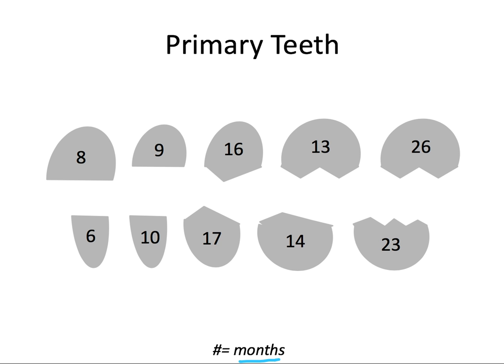The primary teeth are the centrals, laterals, canines, first primary molars, and second primary molars. Starting with the lower central incisor, you draw your lowercase n, then your x, then skip over and finish with your i at the end. After doing that, you'll see you went in order from six months to 26 months. For additional help remembering the numbers, you have six, 16, and 26 — all ending in six — giving you reference points for this entire sequence.